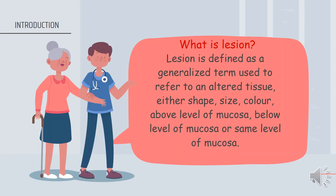For the introduction, what is the meaning of a lesion? Lesion is defined as a generalized term used to refer to an altered tissue, either in shape, size, or color — above the level of the mucosa, below the level of the mucosa, or at the same level of the mucosa. In our presentation, we will be focusing on the lesion on the palate.